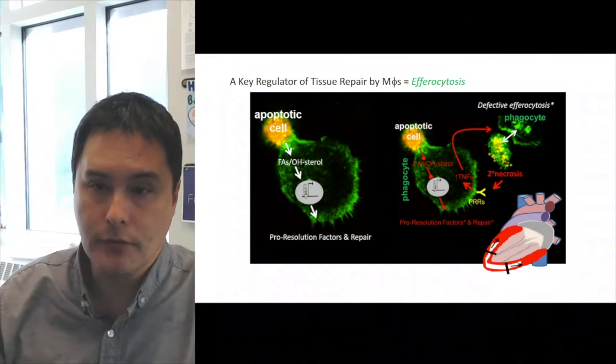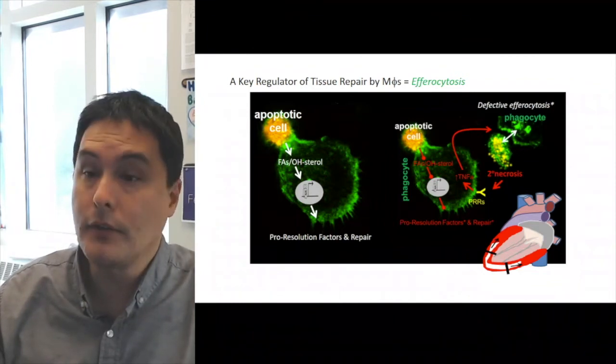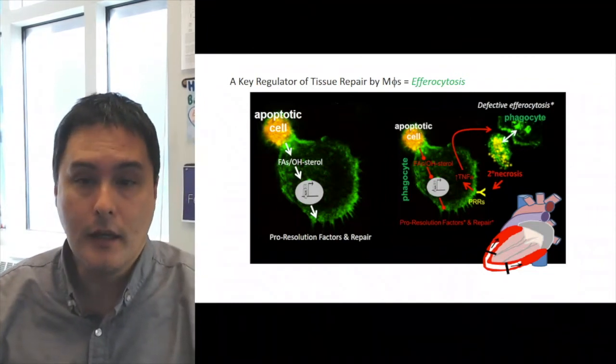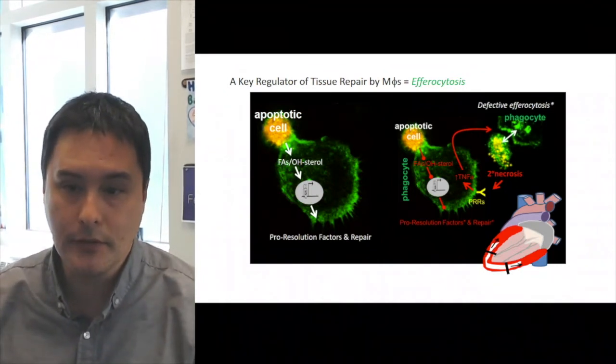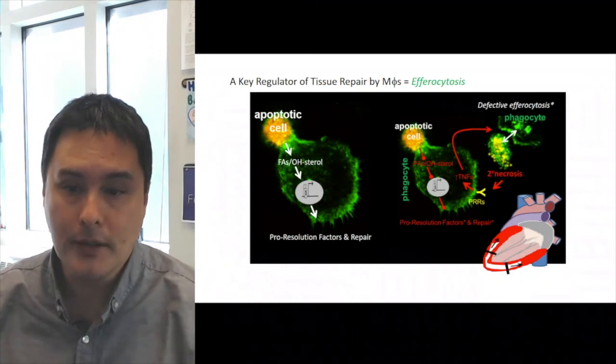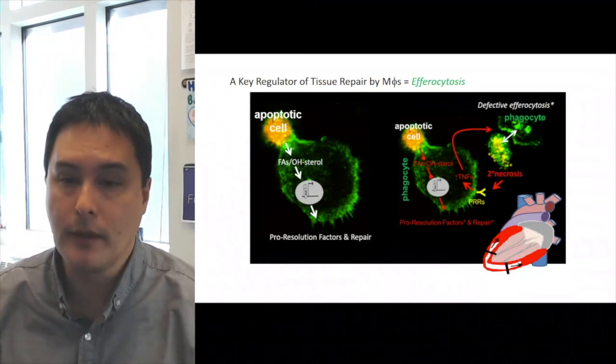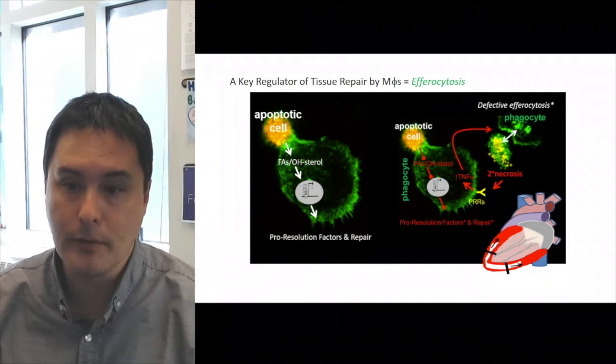A key regulator of tissue repair by macrophages is this process called efferocytosis. Efferocytosis is the uptake and clearance of apoptotic cells, metabolism of these dying cells, and the transcriptional response that leads to secretion of anti-inflammatory factors and repair cytokines.